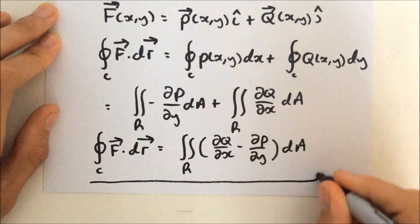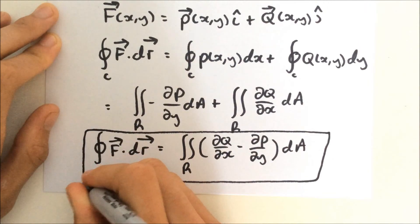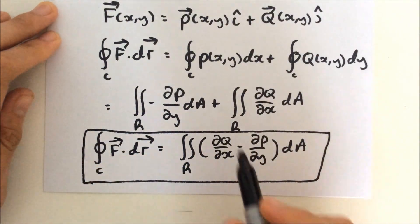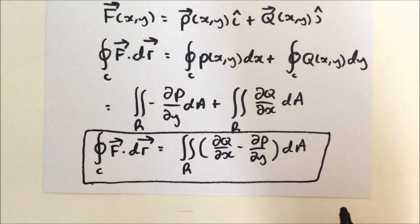Which is dQ/dx minus dP/dy times dA. And that, my friends, is Green's theorem. And that of course is for C going in an anti-clockwise direction.